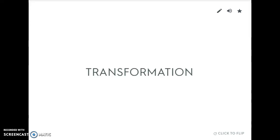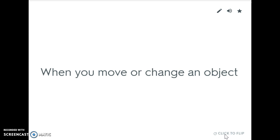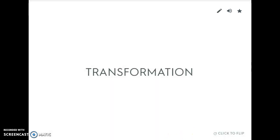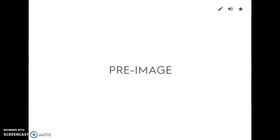All right, what we're doing today is starting our notes for section 4.1. Our first vocabulary word is a transformation — everything in chapter four deals with transformations. A transformation is when you move or change something. The things we'll be able to do is slide them, rotate them, flip them, and even make them bigger or smaller. The general term for any kind of movement or changing of an object is called a transformation.